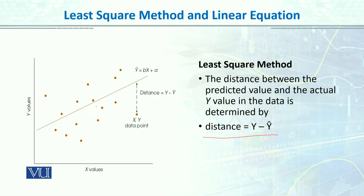For example, we have data with SAT scores and GPA, and the dots are the original data. For regression, the computer uses the least square method to draw the line of best fit.